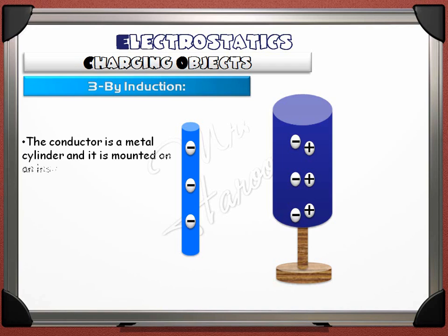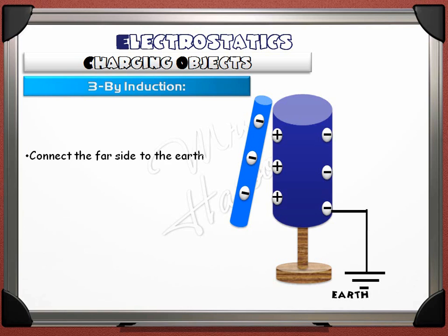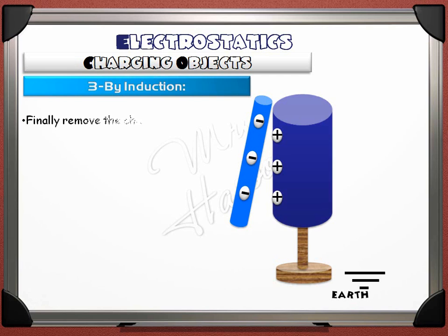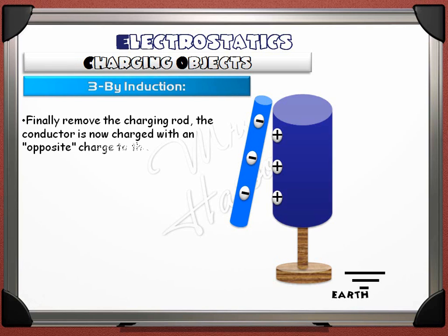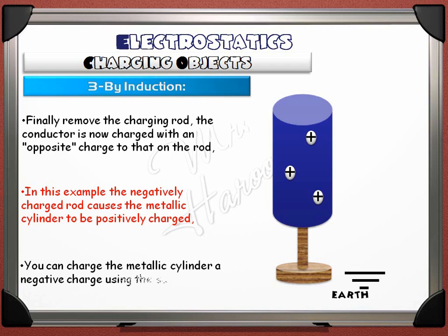The third method is charging by induction. This is used to charge metal objects. The conductor is a metal cylinder mounted on an insulating stand. Bring the charged rod near the conductor — the conductor becomes polarized but is still neutral. Connect the far side to the earth; this allows the negative charges to escape. Disconnect from earth. Finally, remove the charging rod. The conductor is now charged with an opposite charge to that on the rod. In this example, the negatively charged rod causes the metallic cylinder to become positively charged. You can charge the metallic cylinder negatively using the same method, but this will need a positively charged rod.